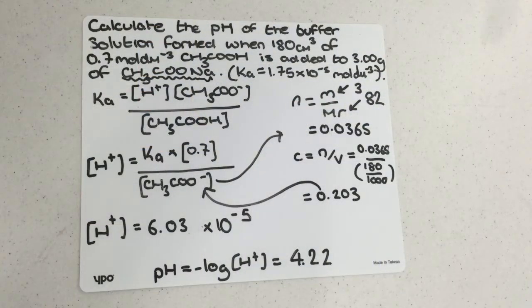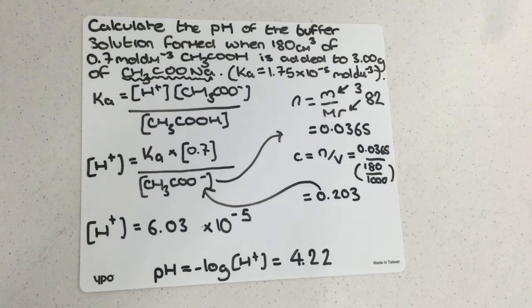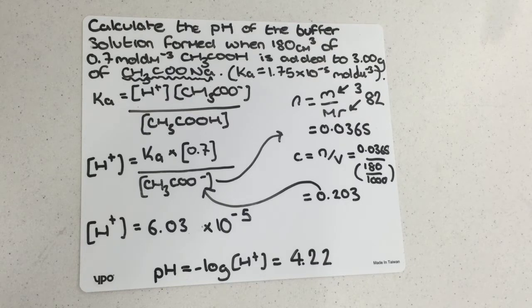This is a buffer calculation where we're making the buffer from dissolving some solid salt inside the weak acid. I've got 180 centimetres cubed of the weak acid, and the concentration of the weak acid is 0.7 mol per decimetre cubed, and the mass of the salt is 3 grams.